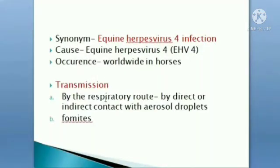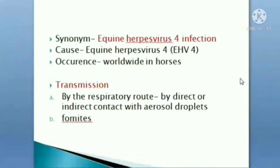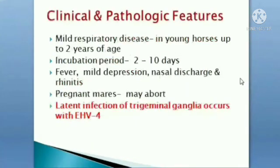Equine Herpes Virus 4 is a respiratory tract infection transmitted through the respiratory route by direct contact, aerosol droplets, or fomites. Clinically, there is mild respiratory disease in young horses up to two years of age. The incubation period is two to ten days, with fever, mild depression, nasal discharge, and rhinitis.